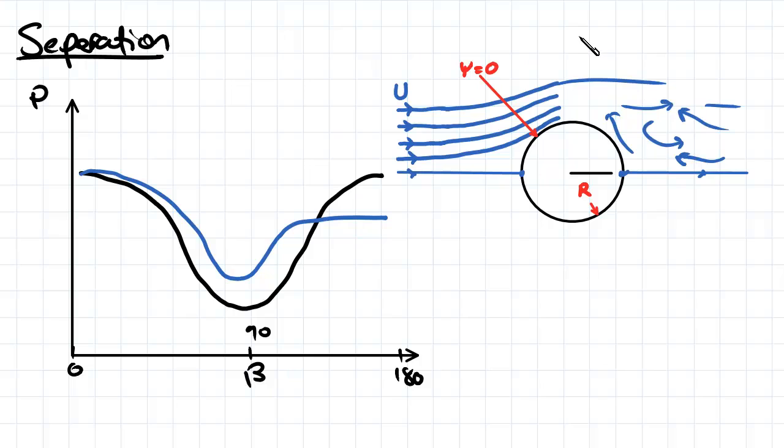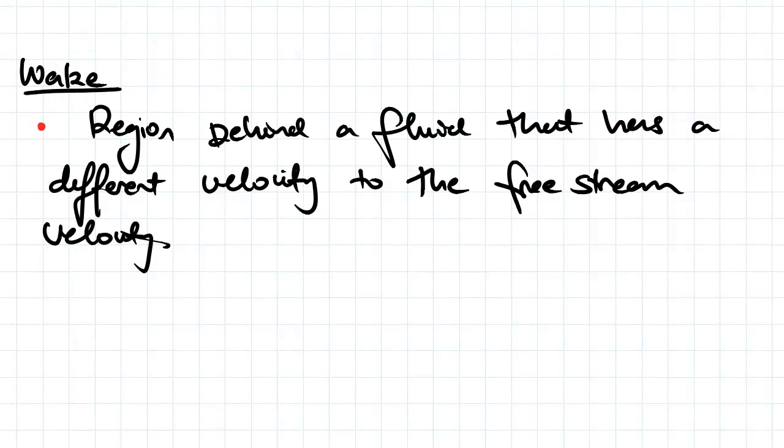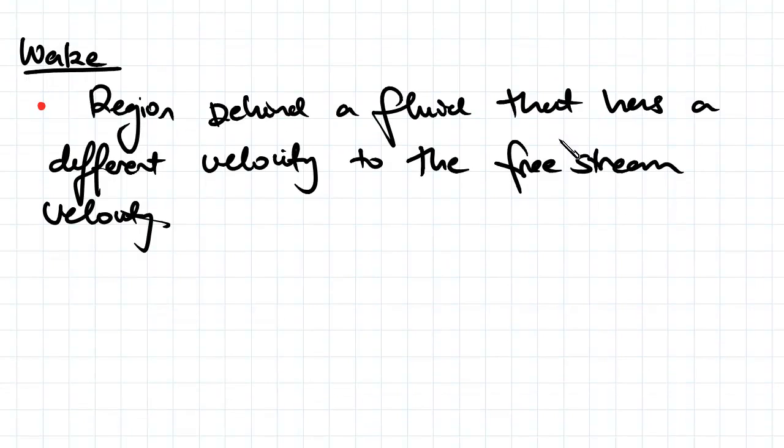And the separation region is what we call the wake. So the wake is the region behind the fluid that has a different velocity to the free stream velocity.